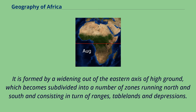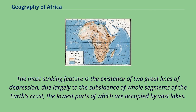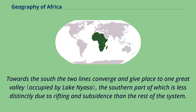The East African plateau is formed by a widening out of the eastern axis of high ground, which becomes subdivided into a number of zones running north and south, consisting in turn of ranges, tablelands and depressions. The most striking feature is the existence of two great lines of depression, due largely to the subsidence of whole segments of the Earth's crust, the lowest parts of which are occupied by vast lakes. Towards the south the two lines converge and give place to one great valley.